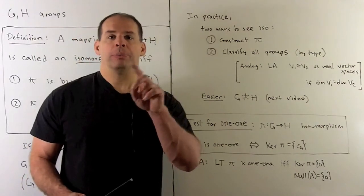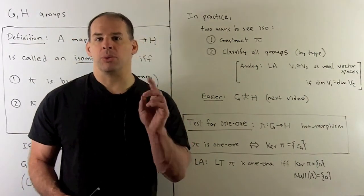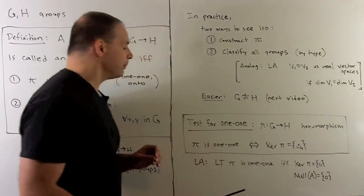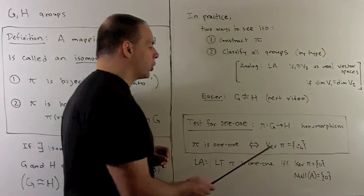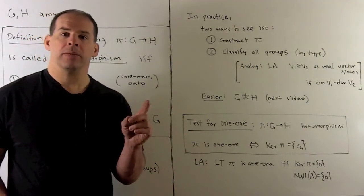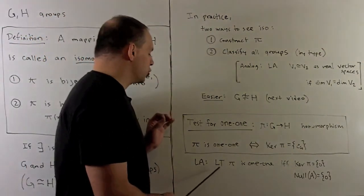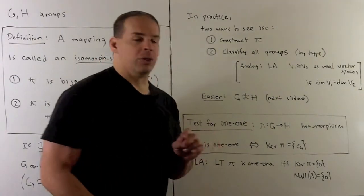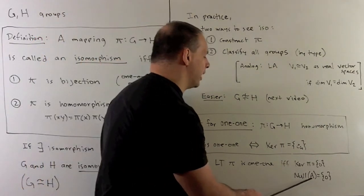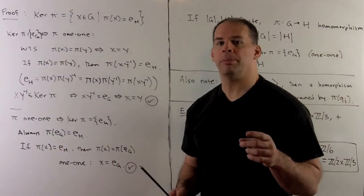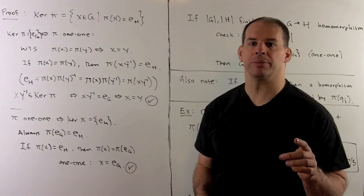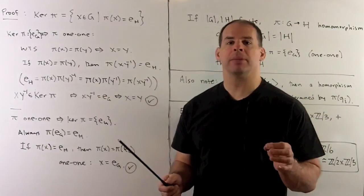Now we need to show one-to-one, onto, and the homomorphism property. We have a test for one-to-one: assume pi from G to H is a homomorphism. Then pi is one-to-one if and only if the kernel of pi equals the identity element in G. The analogy from linear algebra: a linear transformation pi is one-to-one if and only if the kernel equals zero — i.e., the null space of the associated matrix A equals zero. Recall, the kernel of pi is the set of all x in G such that pi of x equals the identity in H. We showed last time the kernel of pi is a normal subgroup of G.